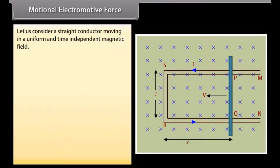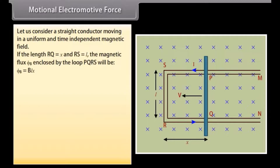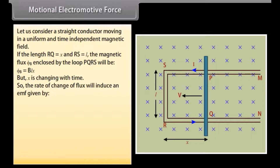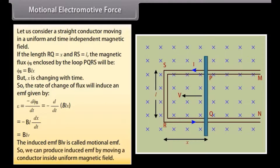Consider a straight conductor moving in a uniform and time-independent magnetic field. Let a rectangular conductor PQRS have conductor PQ free to move. The rod PQ is moved with a constant velocity V in a uniform magnetic field B perpendicular to the plane of the system. If the length RQ is x and RS is L, the magnetic flux Phi_B enclosed by loop PQRS is equal to BLx. Since x is changing with time, the rate of change of flux will induce an EMF given by −d(BLx)/dt = BLV. The induced EMF BLV is called Motional EMF. Thus, we can produce induced EMF by moving a conductor inside a uniform magnetic field.